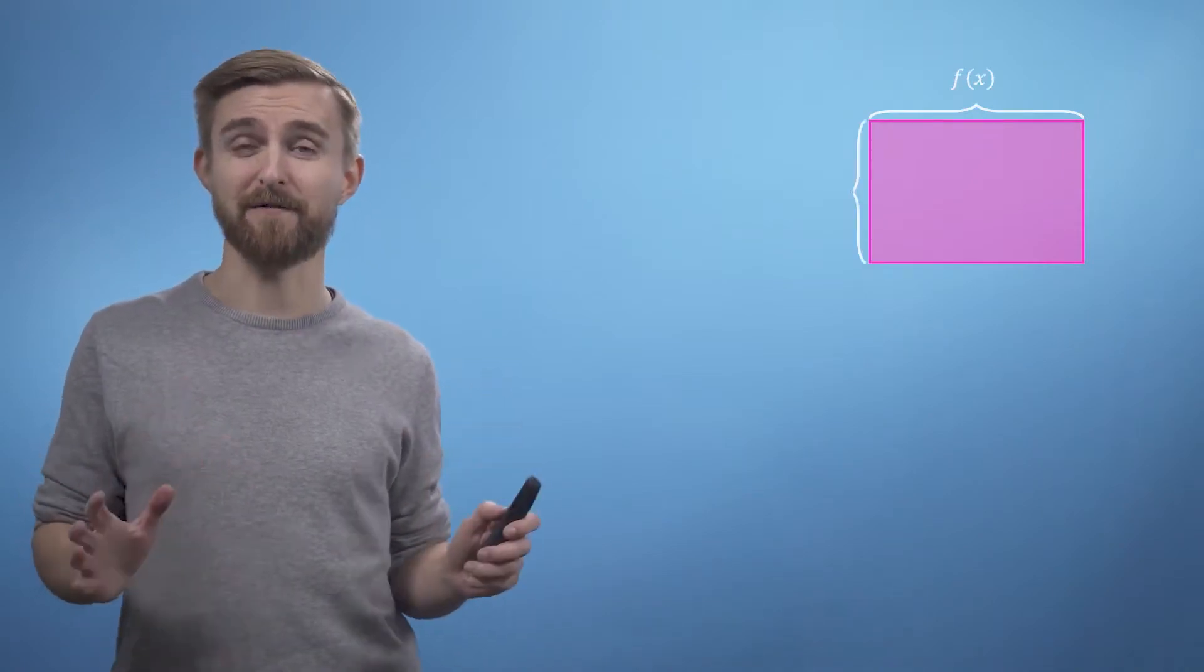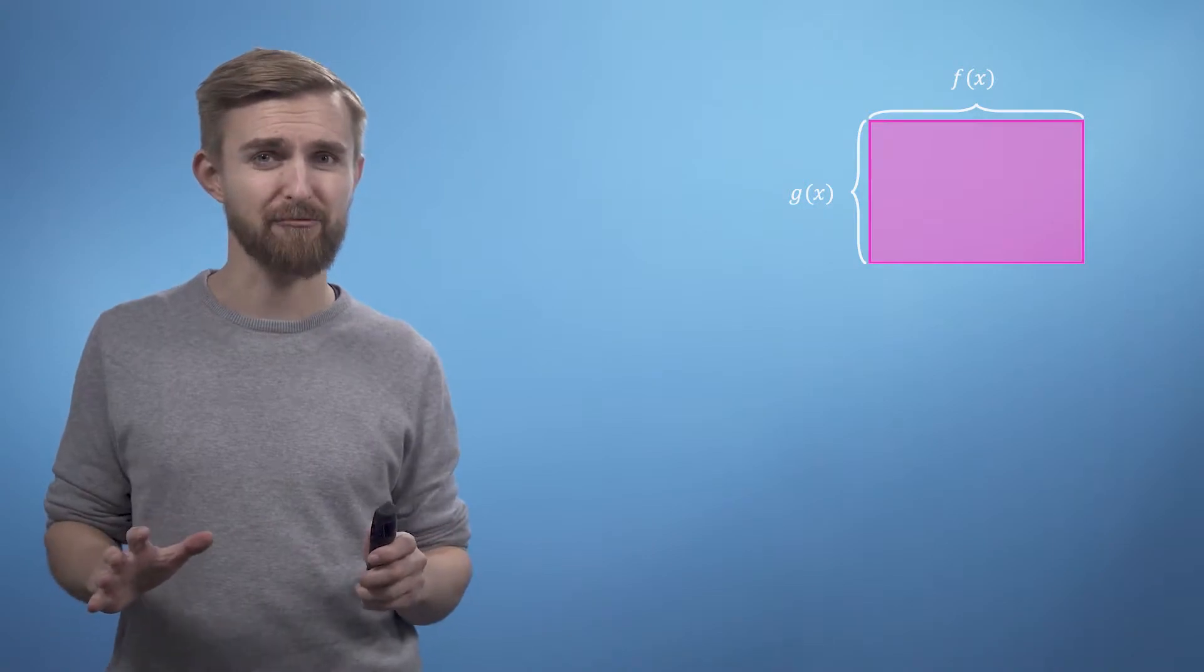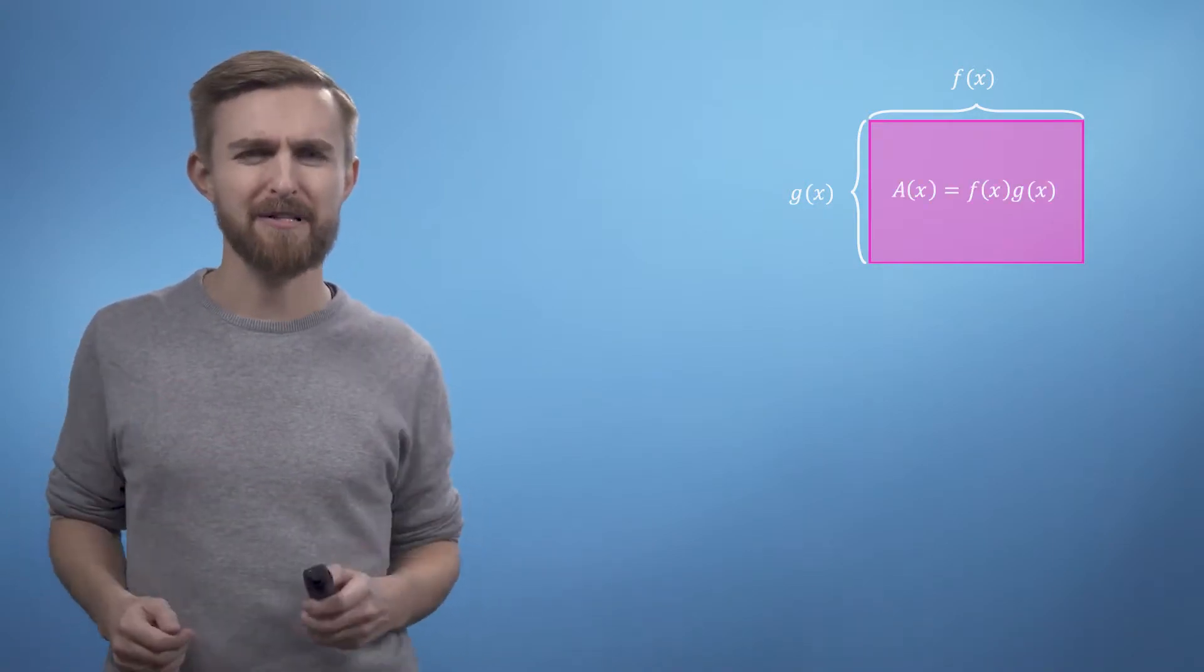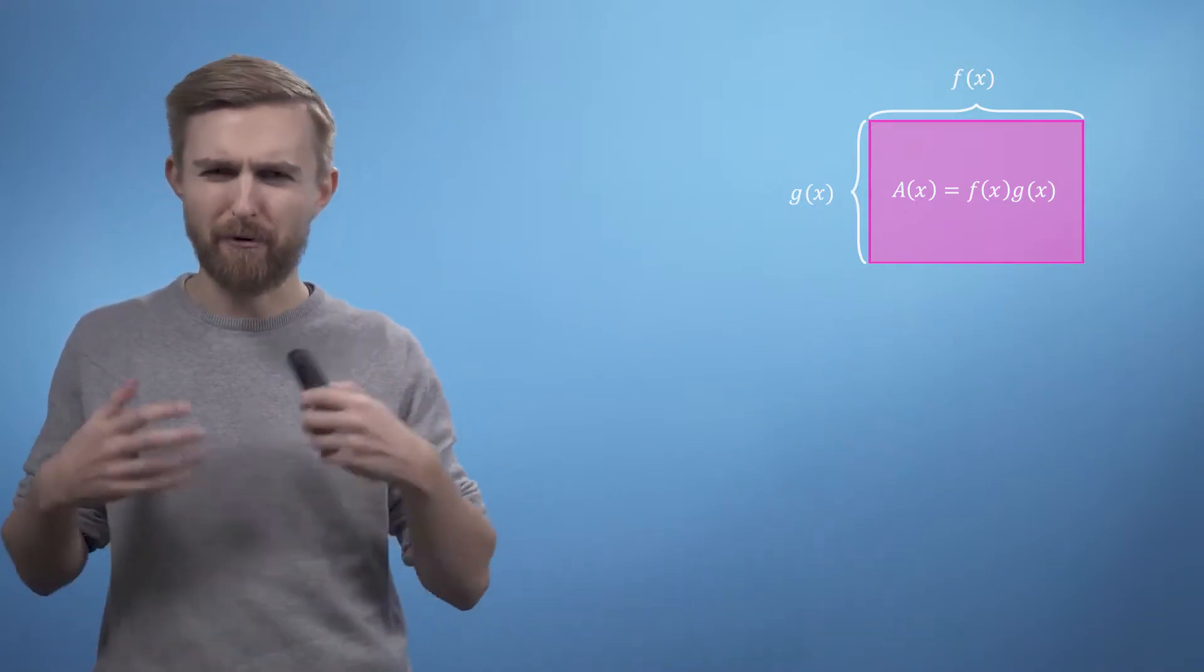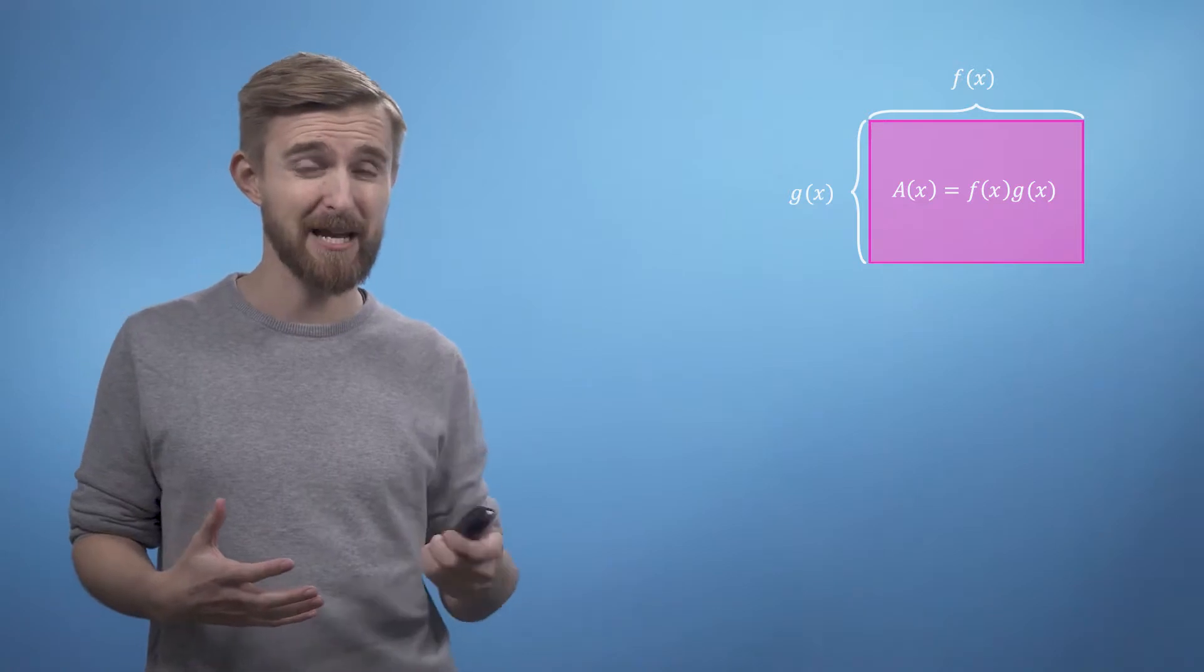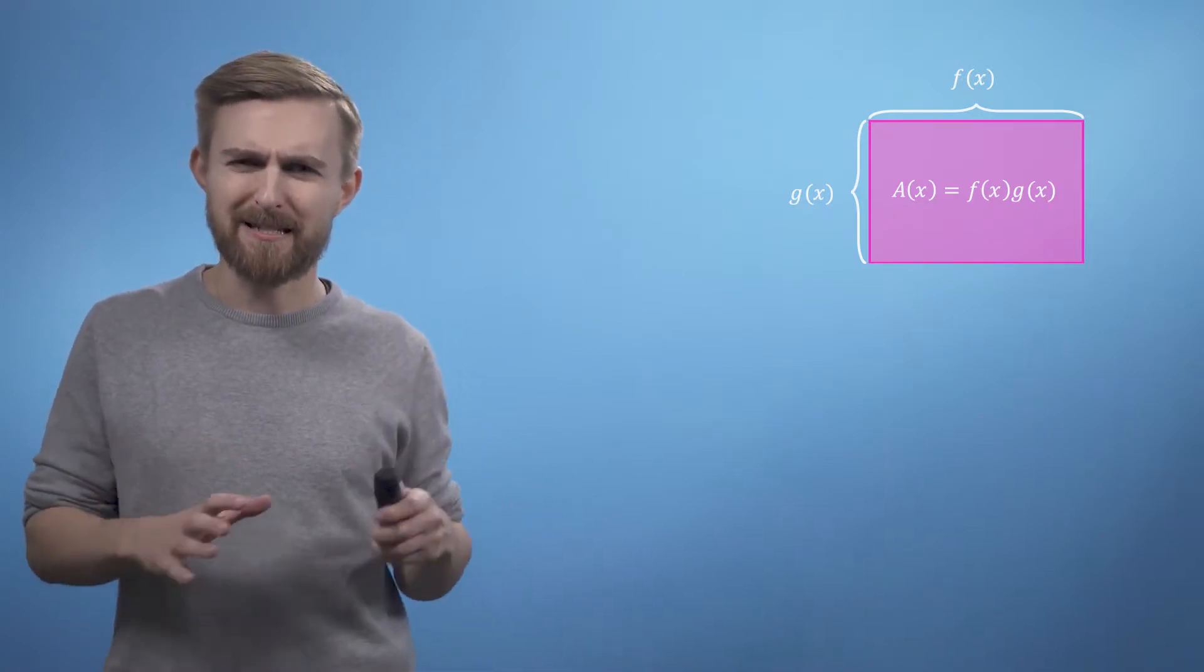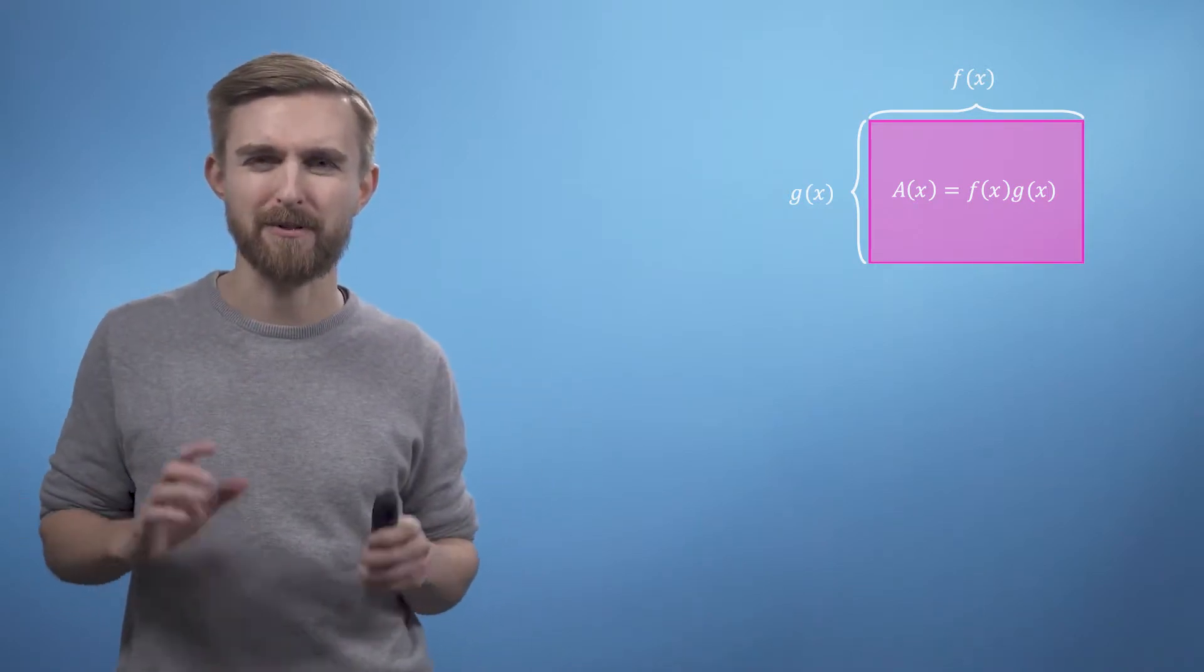Imagine a rectangle where the length of one side is the function f and the other side is the function g. This means that the product of these two functions must give us the rectangle's area, which we can call a. Now consider that if we differentiate f times g, what we're really looking for is the change in area of our rectangle as we vary x. So let's see what happens to the area when we increase x by some small amount delta x.